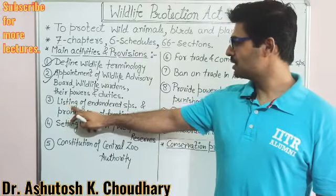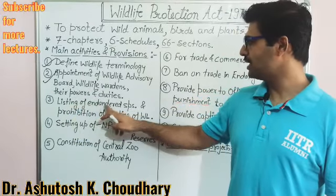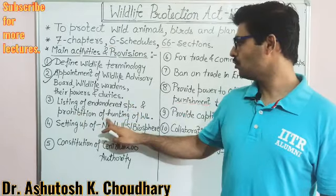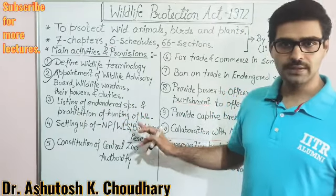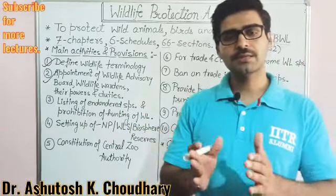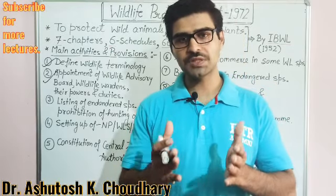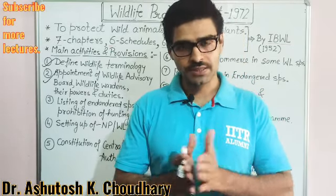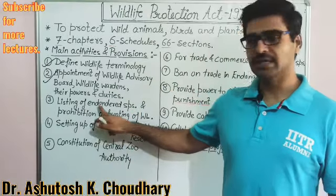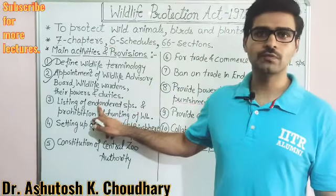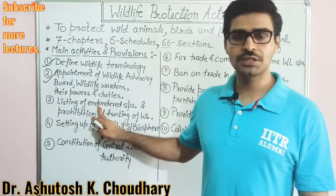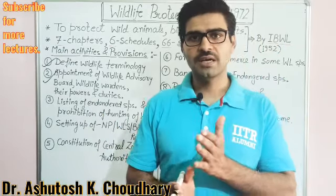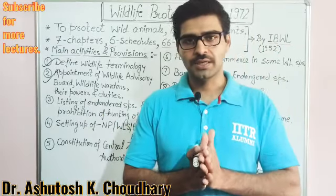The third point is the listing of endangered species and prohibition of hunting of wildlife. Wildlife species can be categorized into different categories — some of these species are endangered, some are rare, some are vulnerable, and some are extinct.